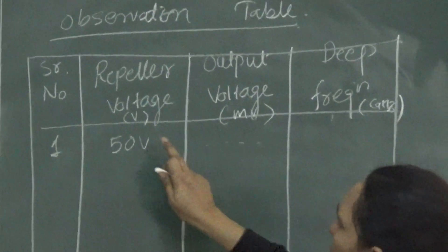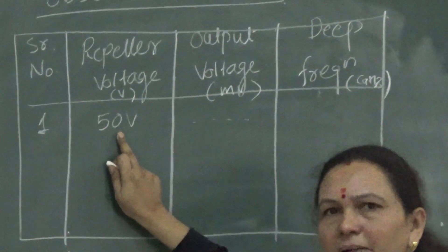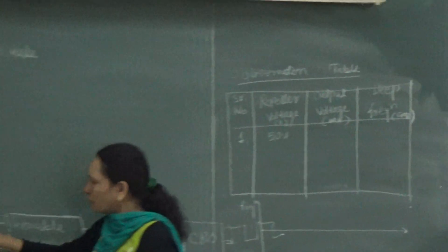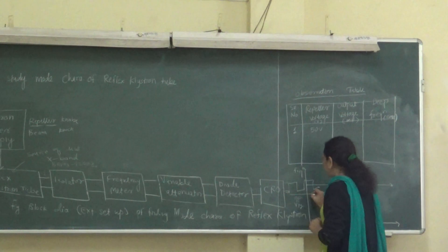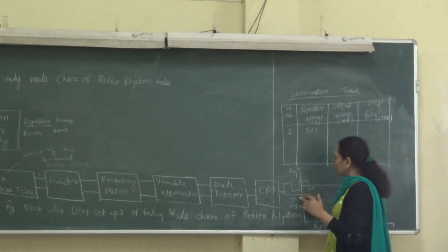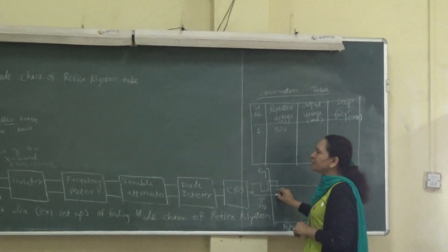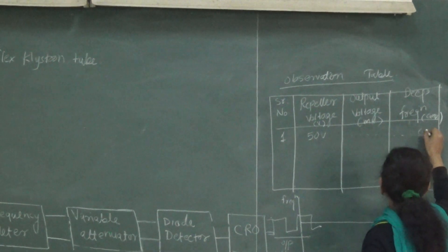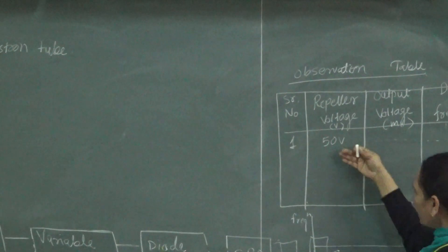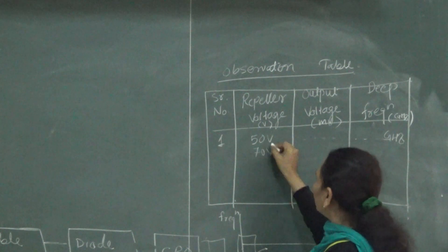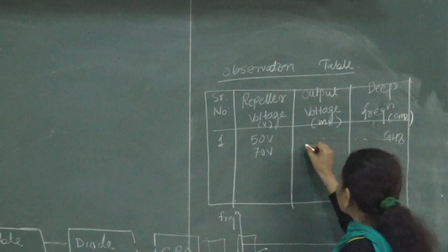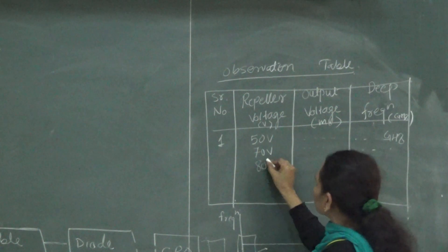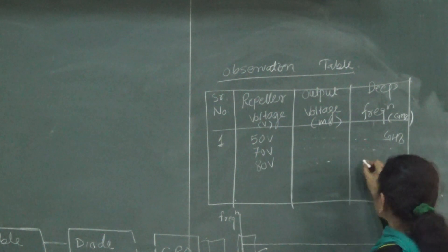To find the frequency at 50 volts repeller voltage, we tune the frequency meter in the clockwise direction. At only one frequency we get a dip on the CRO; for all other frequencies the output remains a square wave. At the point where we get the dip, we note down that frequency — that is the operating frequency. Then we increase the repeller voltage to 70 volts and repeat the same procedure to find the dip frequency. Similarly, we set it to 80 volts and measure the output voltage and its corresponding dip frequency.